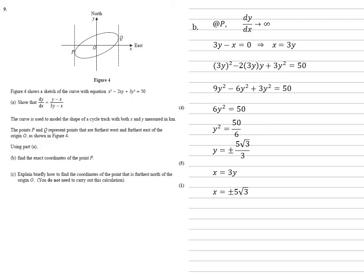For our x and y we've got both positive and negative coordinates, but looking on our diagram we can see there are two points with vertical gradients, P and Q. P is in a negative quadrant so we're going to take the negative of our two answers, so the coordinates are minus 5 root 3 and minus 5 root 3 over 3.